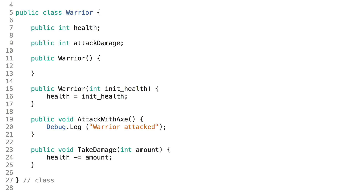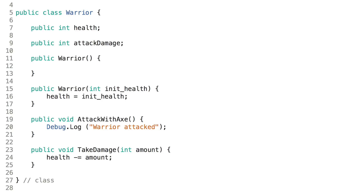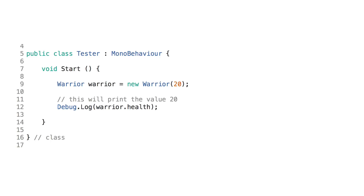We also have a constructor with a parameter — an integer called initHealth. Inside that constructor, health = initHealth, meaning we set the health variable declared on line 7 equal to the value passed as a parameter. So if we create a new object with warrior = new Warrior(20), that value 20 is applied to health. Typing warrior.health will then display 20 in the console. If we call TakeDamage(10), our warrior takes 10 damage.